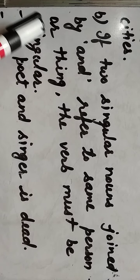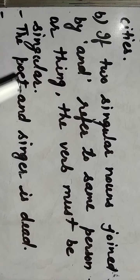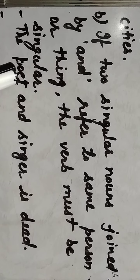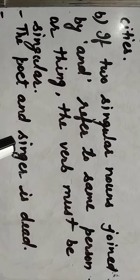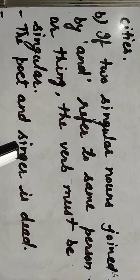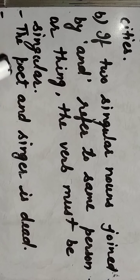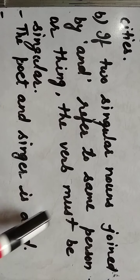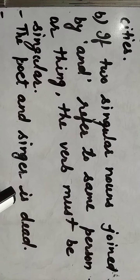'The poet and the singer' — अगर दोनों के साथ 'the' हो, तो दो अलग-अलग लोगों की बात है और हम 'are' use करते। पर 'the poet and singer is dead' में 'the' only पहले के साथ है, तो एक ही person की बात है — इसलिए singular verb 'is' आएगी।